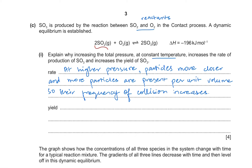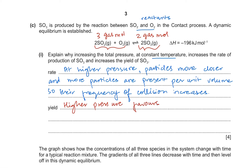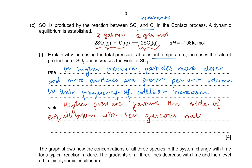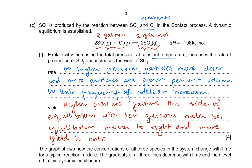When we talk about the yield, we notice that on the left-hand side there are three gaseous moles and on the product side there are only two gaseous moles. We must mention gaseous moles specifically, because solids and liquids are not included. Equilibrium with fewer gaseous moles is favored, so equilibrium shifts towards the right side, meaning more product — SO3 — is obtained.